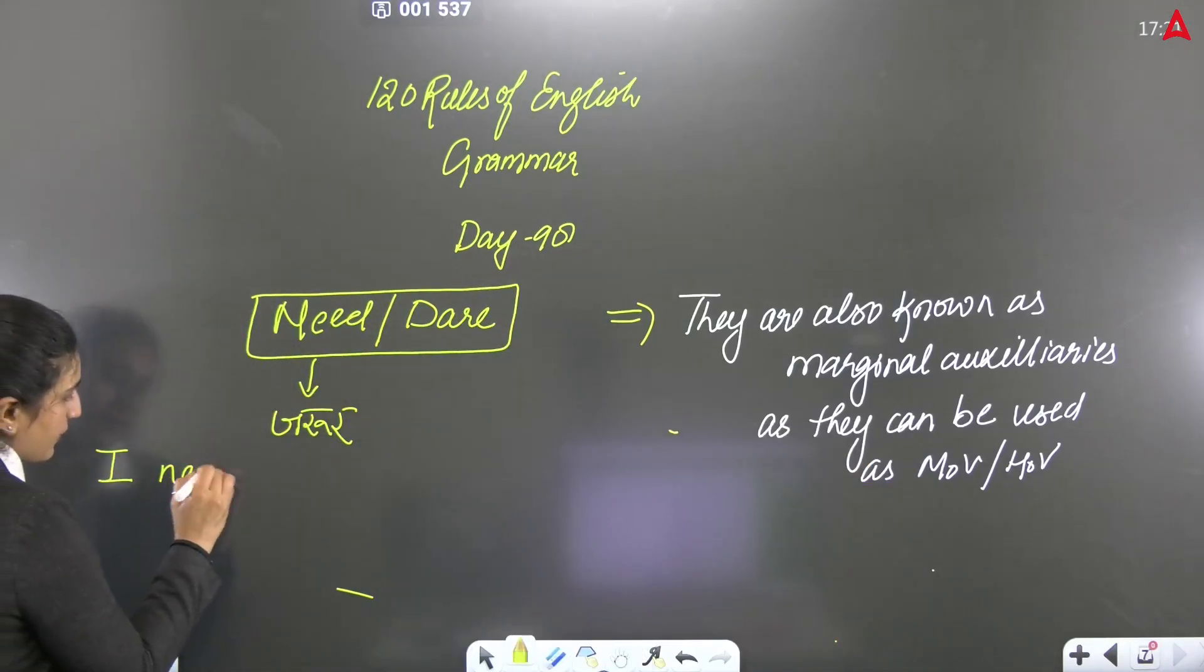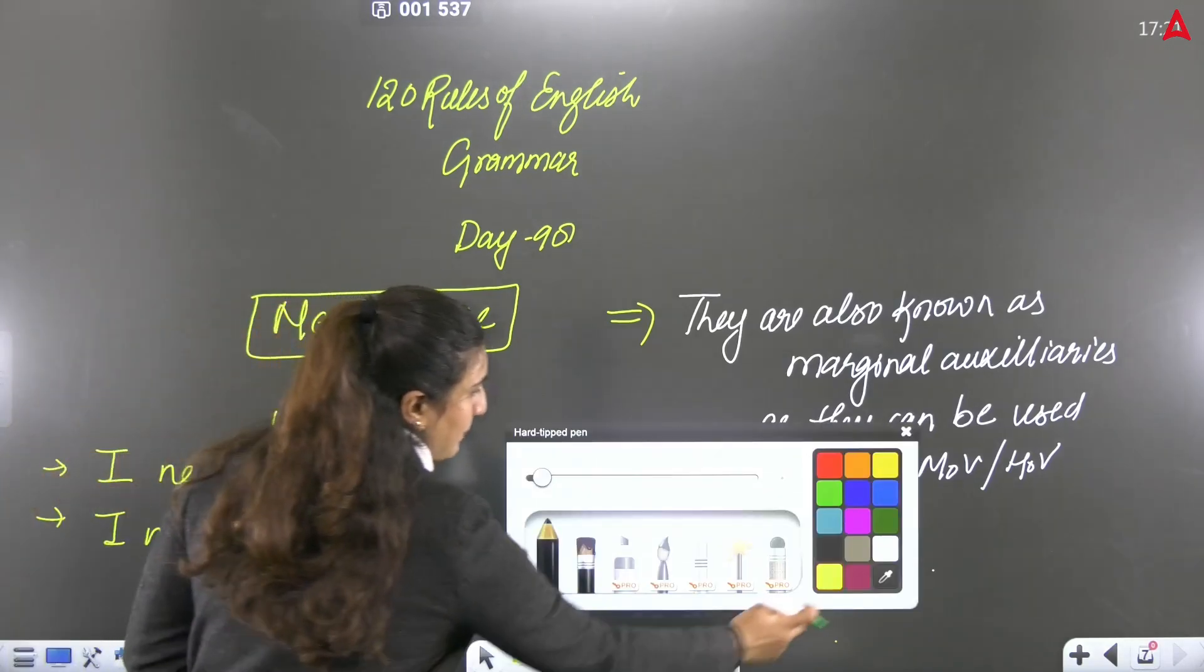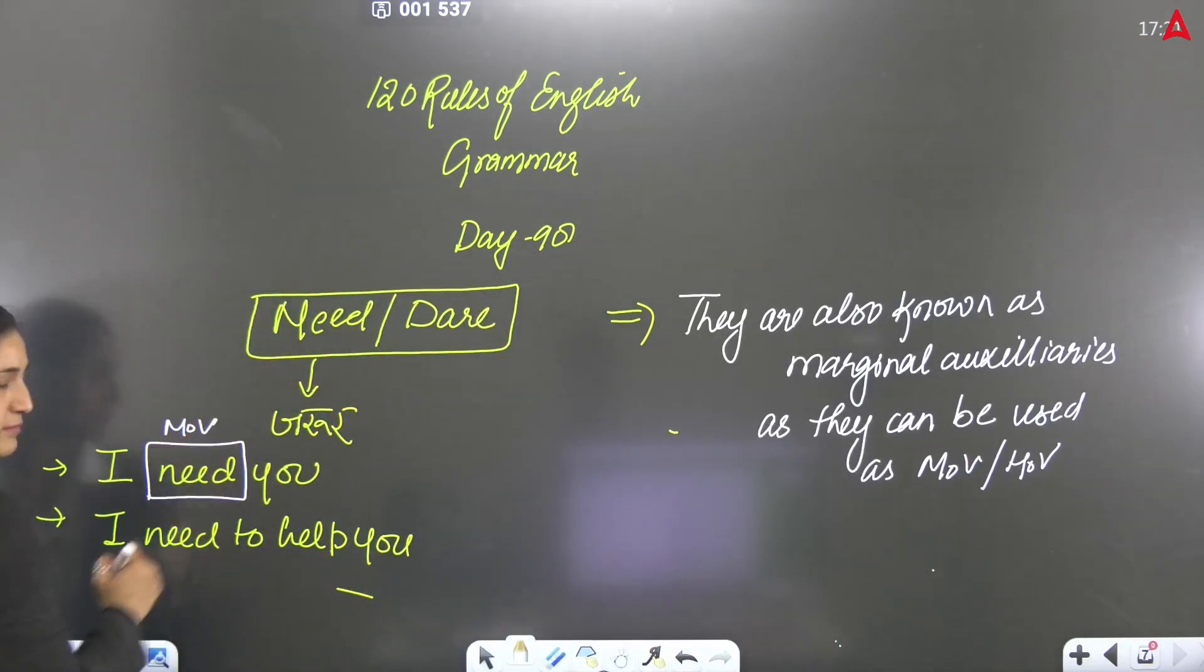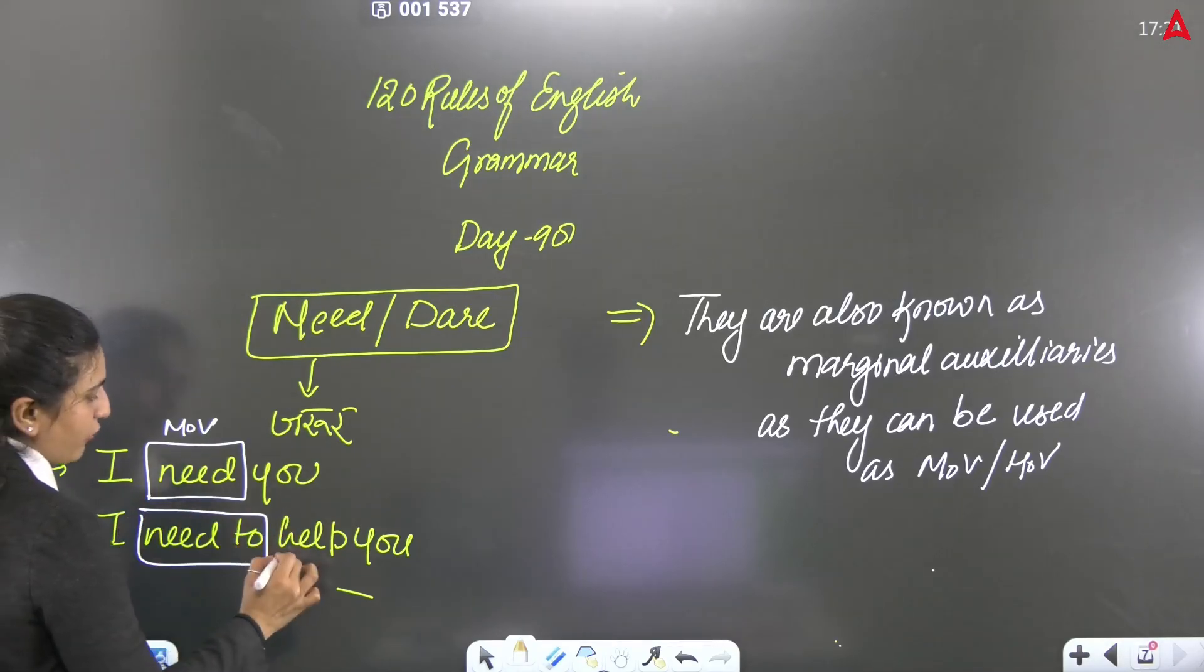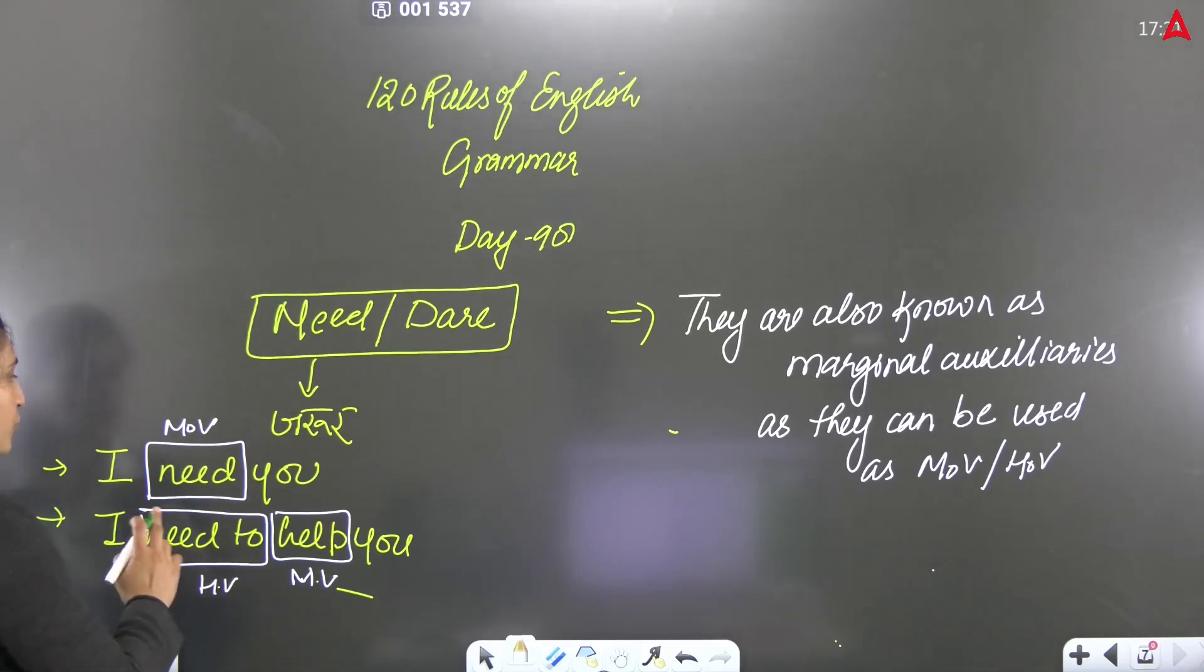As they can be used as main verb or helping verb. For example, I need you, or I need to help you. In the first sentence, need is working as the main verb. But here you can see need to help, so need is the helping verb and help is the main verb. This is why we call it a marginal auxiliary.